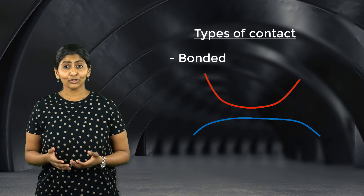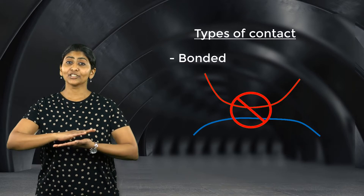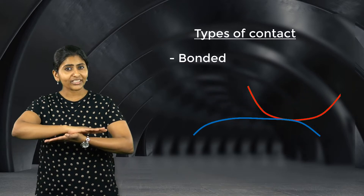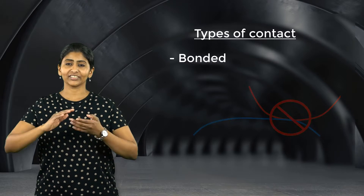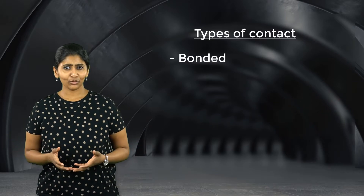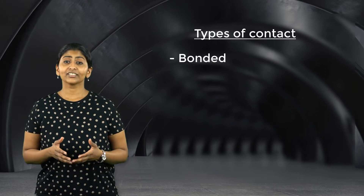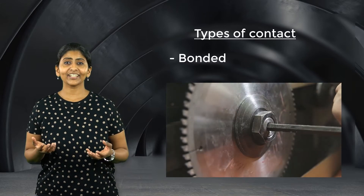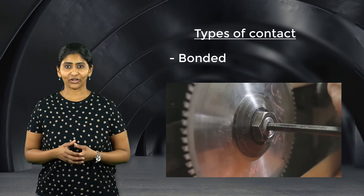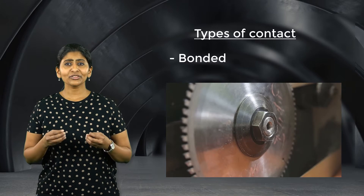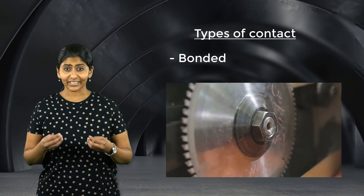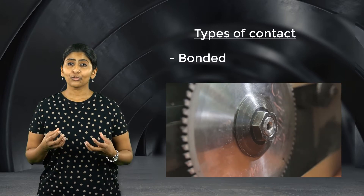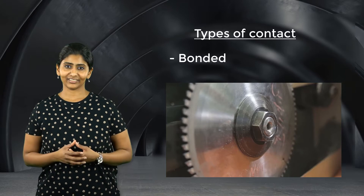They do not separate from each other in the normal direction and they also don't slide over each other. In most cases, the contact between the bolt and the nut is defined as a bonded contact since there is no significant relative motion between the two when the bolt is sufficiently tightened.